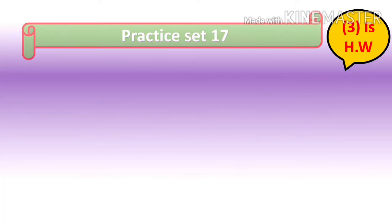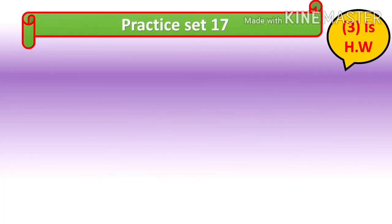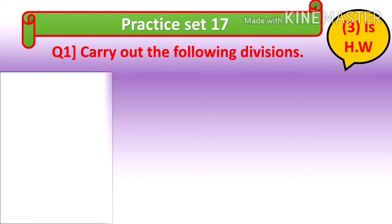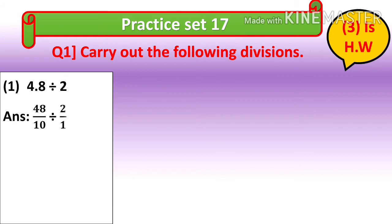Let's see practice exercise number 17, question number 1: 4.8 divided by 2. Convert 4.8 into fraction, that is 48 upon 10, divided by 2 upon 1. So, 48 upon 10 divided by 2 upon 1...